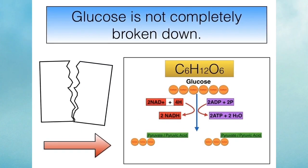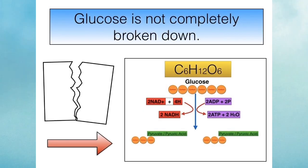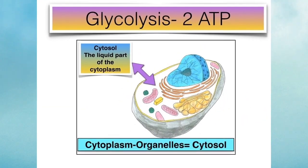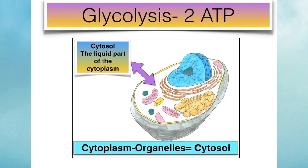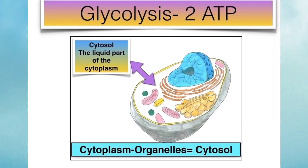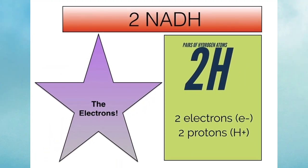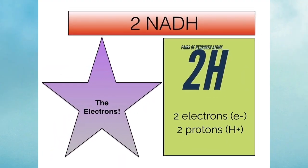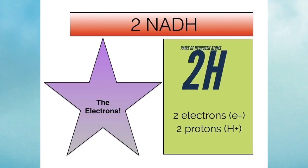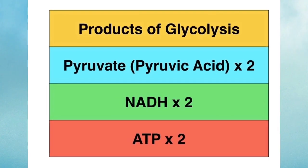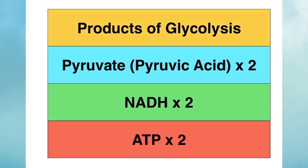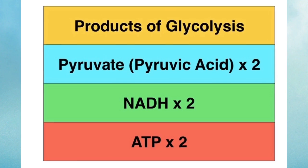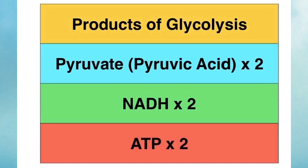The main feature of glycolysis is that glucose is not completely broken down, and for this reason it gives a net gain of only two ATP molecules. Not forgetting those two NADH molecules, which were produced by removing pairs of hydrogen atoms. So at the end of glycolysis you have the two pyruvic acids or pyruvate molecules, the two NADHs, and the two ATP molecules.